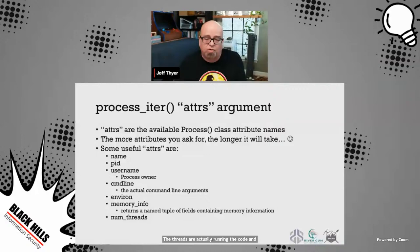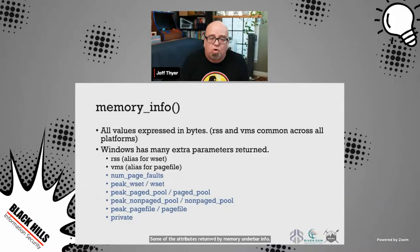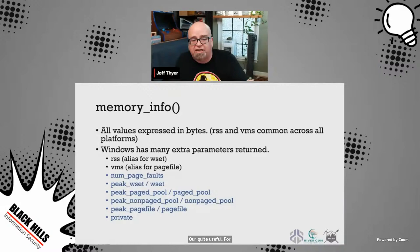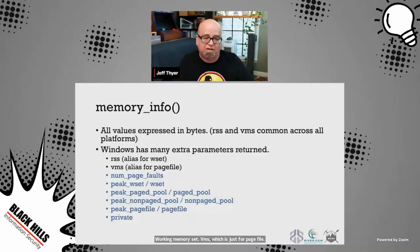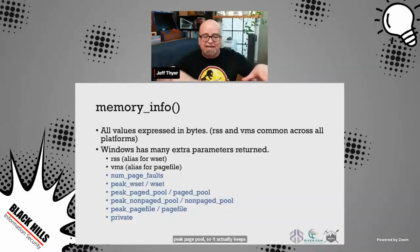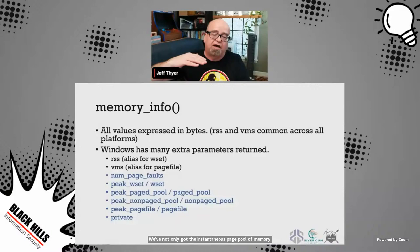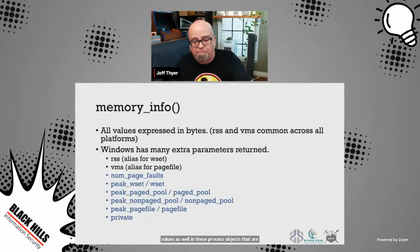On Windows, a process is essentially just a container that has lots of threads in it — threads are where the actual action is happening. Some attributes returned by memory_info are quite useful. For example, RSS gives you the number of bytes that particular process has allocated — it's an alias for WSET (working set). VMS is an alias for page file memory allocated in that process. We also get number of page faults, the peak working set, and the peak page pool — so it keeps statistics as well.